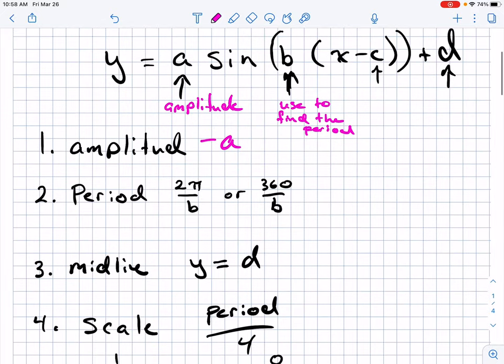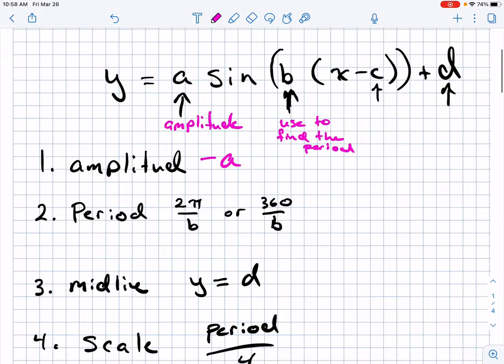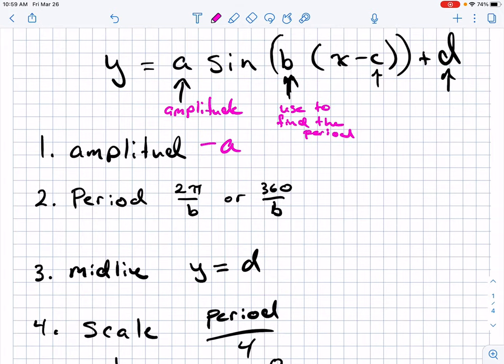We're not going to really use c right now. It's going to come into play here soon, but for today we'll skip c. It's actually a horizontal shift left and right, which we'll talk about later. The midline is a line that would go through the middle of our graph, the middle of our wave, and it's found by y equals d.